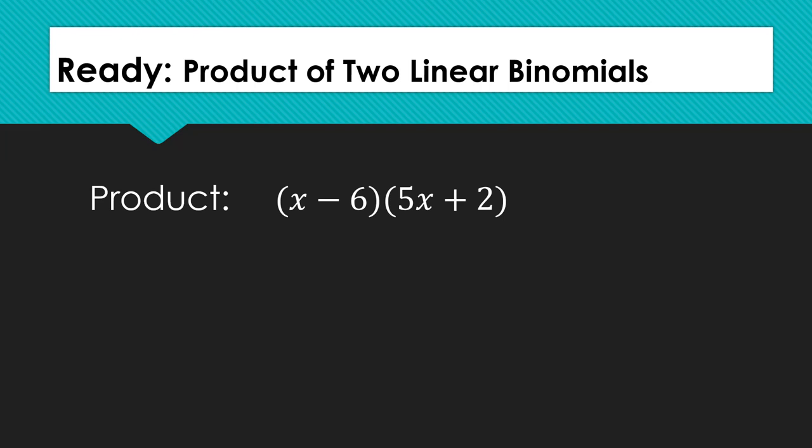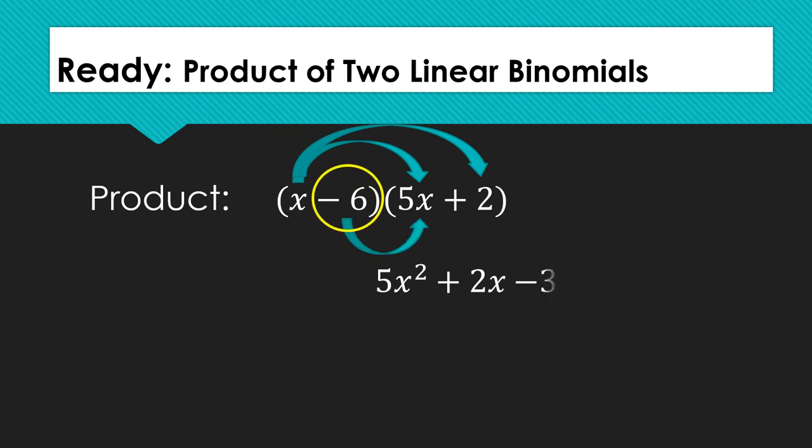Let's look at an example. Here we have x minus 6 times 5x plus 2. We are going to be using the distributive property to remove the parentheses. We will need to distribute each of the terms in the first binomial by each of the terms in the second binomial. When we distribute the x to the 5x and to the 2, we get 5x squared plus 2x. When we distribute the negative 6 to the 5x and to the 2, we get negative 30x minus 12.